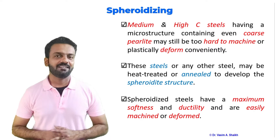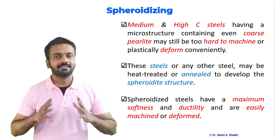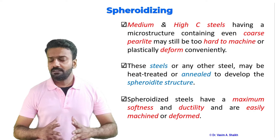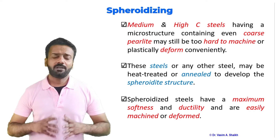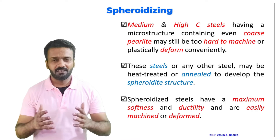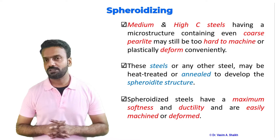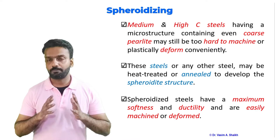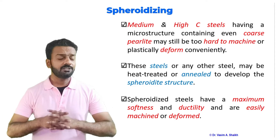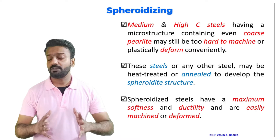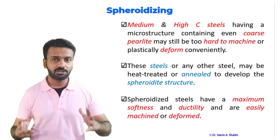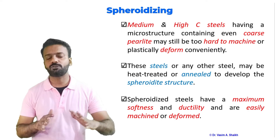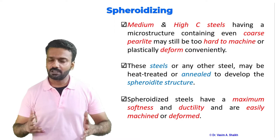The next heat treatment related to annealing is spheroidizing. After annealing, sometimes the material may still be very hard and difficult to machine. In that case we can go for spheroidizing. When we get a spheroidized structure, the material becomes much softer, more machinable, and more pliable — that is the reason we go for spheroidizing even after annealing.